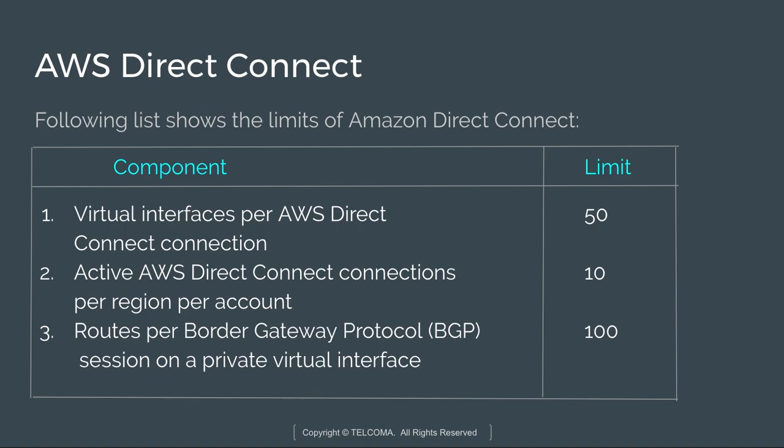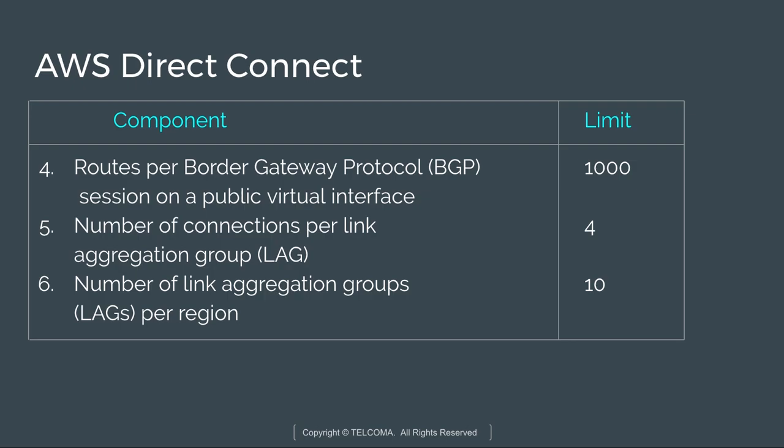Now let's discuss the service limits. Virtual interfaces per Direct Connect connection: limit is 50. Active AWS Direct Connect connections per region per account: 10. Routes per BGP (Border Gateway Protocol) session: 100. Routes per BGP session on a public virtual interface: 1000. Number of connections per link aggregation group: 4. Number of link aggregation groups per region: 10.